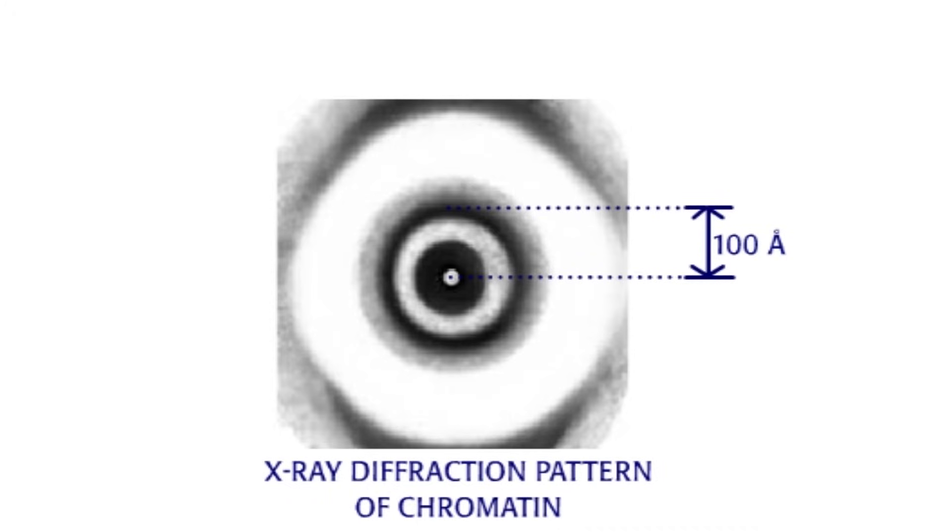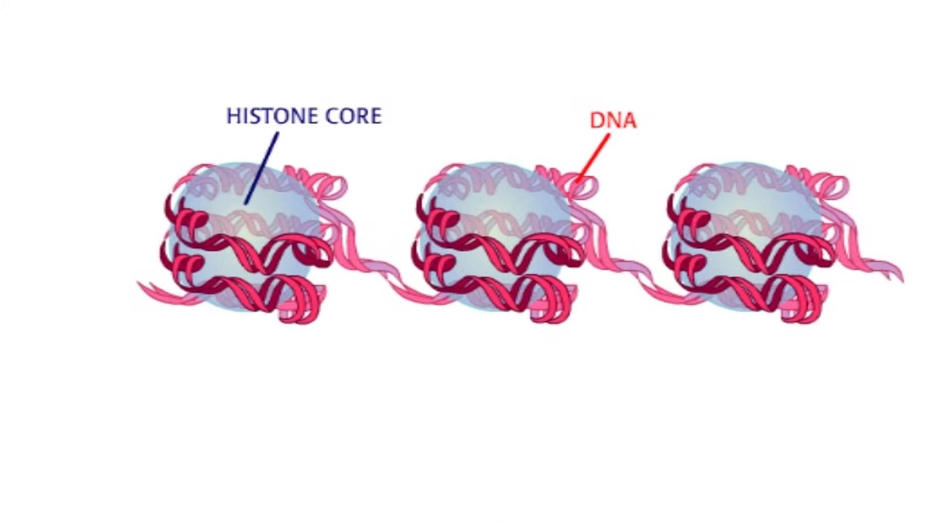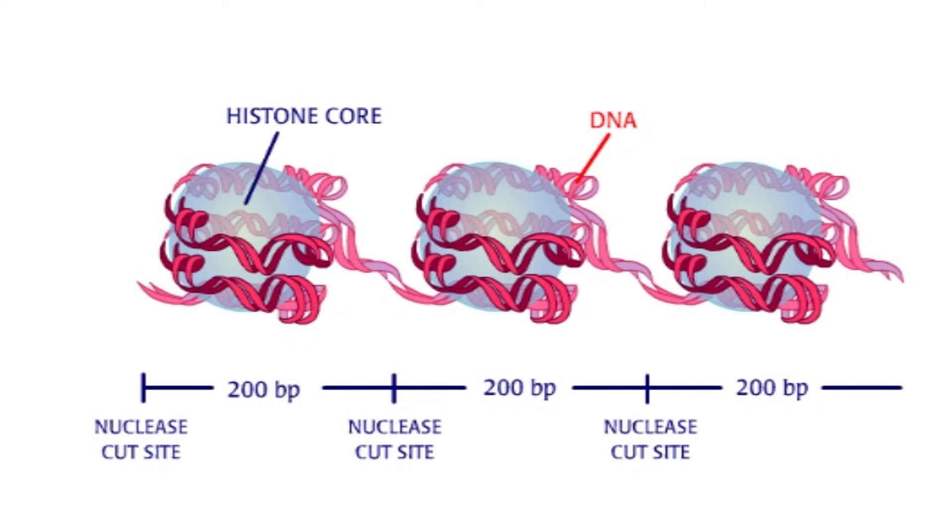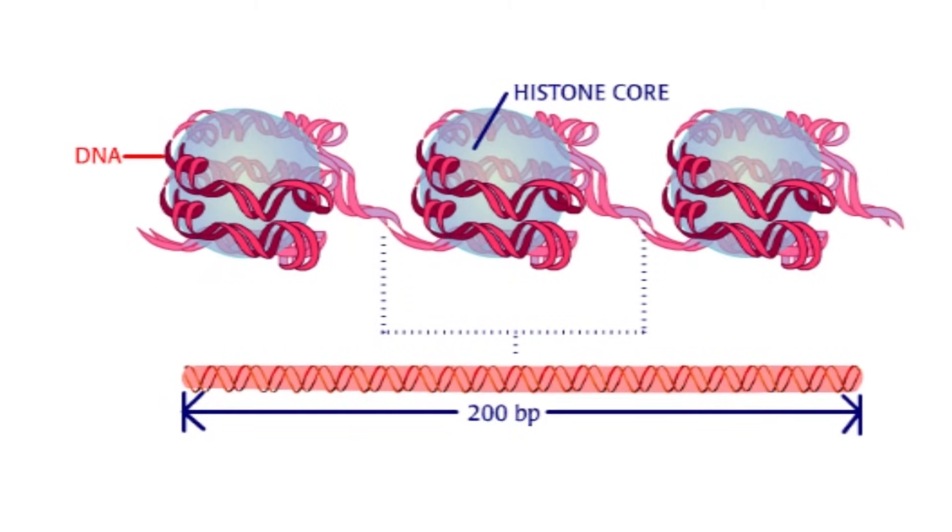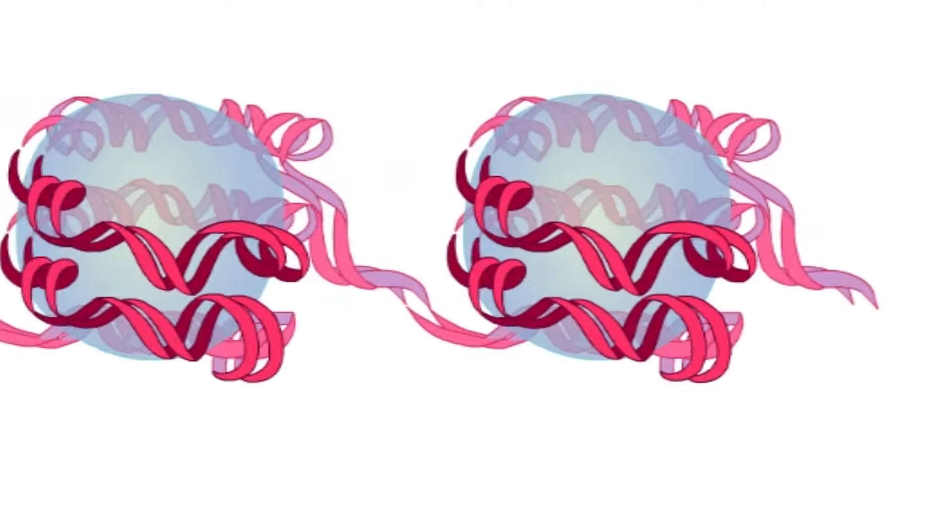Based on X-ray diffraction patterns and nuclease experiments, the 200 base pair repeat observed after digestion corresponds to 200 base pairs of DNA wrapped around each histone core. The 100 angstrom measurement from X-ray diffraction is the width of the histone core and DNA.